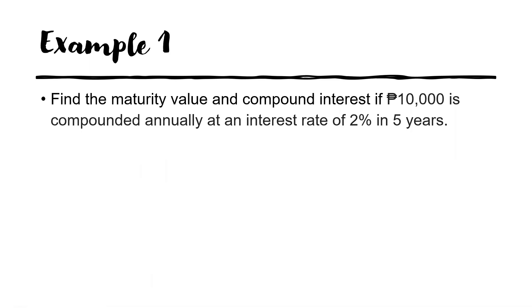Let's have example number one. Find the maturity value and compound interest if P10,000 is compounded annually at an interest rate of 2% in 5 years. Let us identify the given.